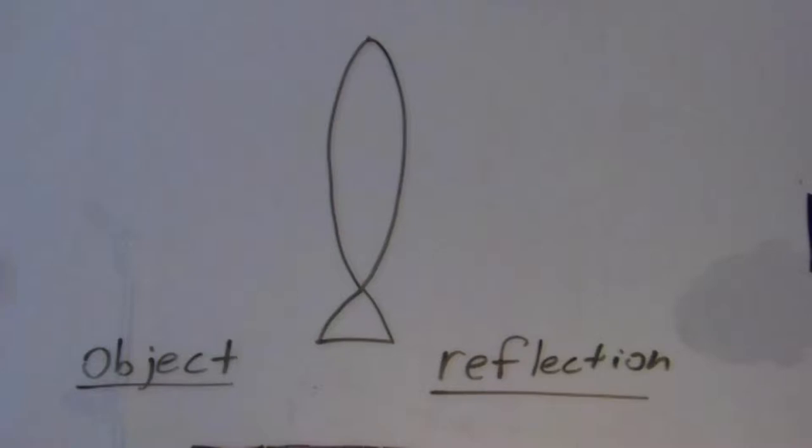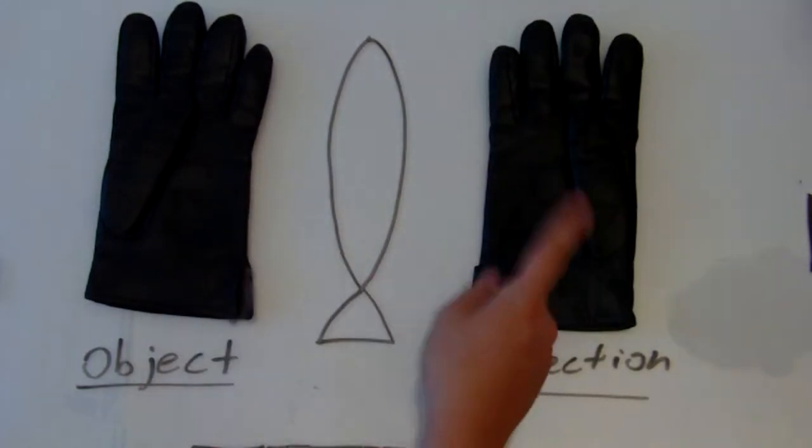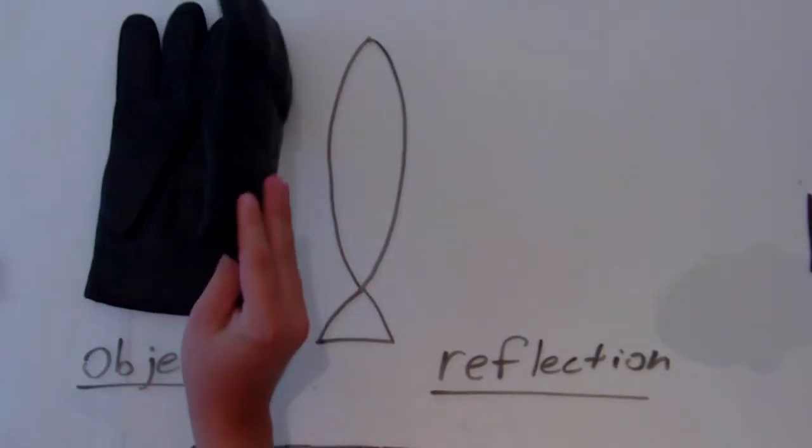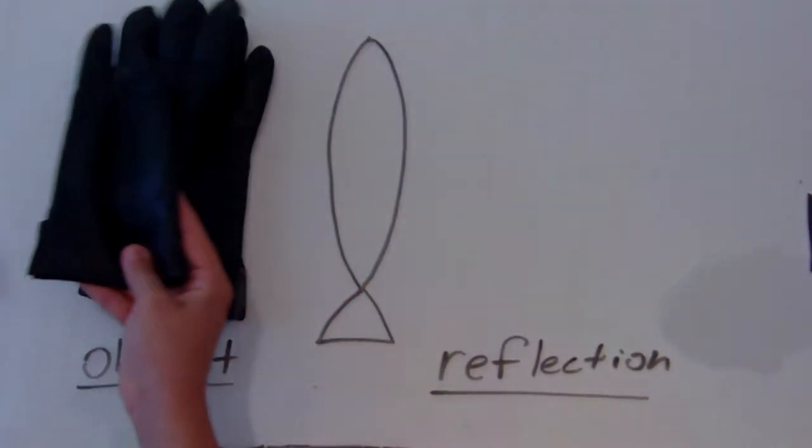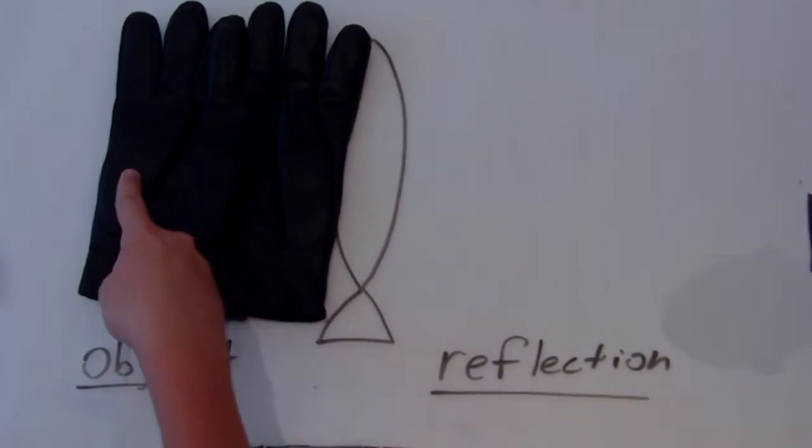Let's just try one more simple example. This time, let's try a pair of gloves. Here we have the object and its reflection. When we try to superimpose the reflection on its object, we find that we are not able to. No matter what we try, we cannot do it. The problem here is that the thumbs will not line up.